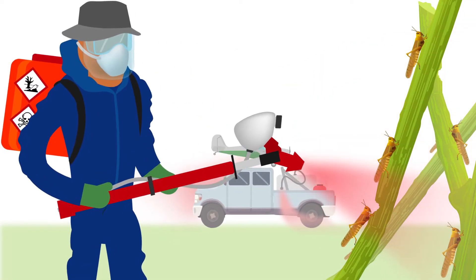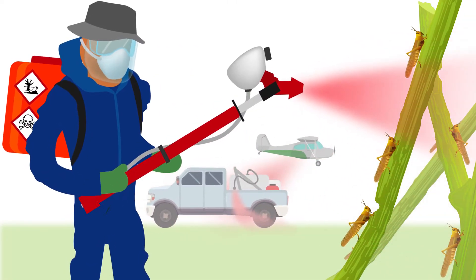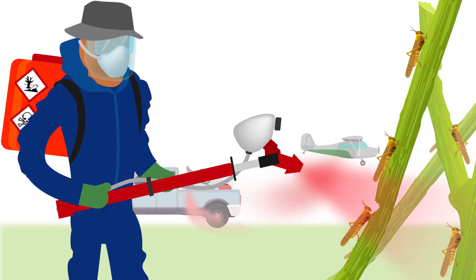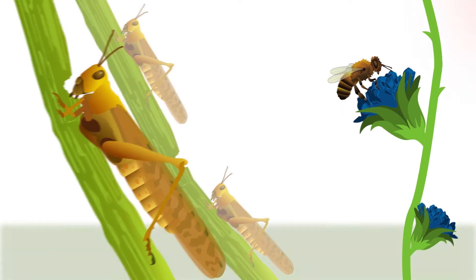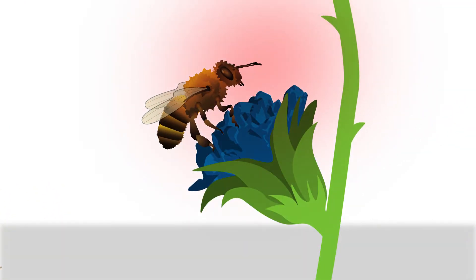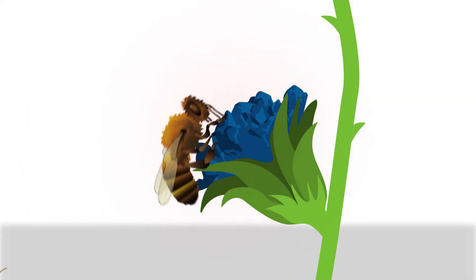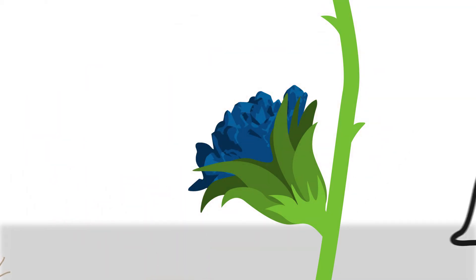For the last 50 years, chemical pesticides have been used to control locusts. If used appropriately, these chemical pesticides have little impact on humans. However, inappropriate use can be harmful to humans and the environment, contaminating soil and water and killing beneficial insects such as pollinators.